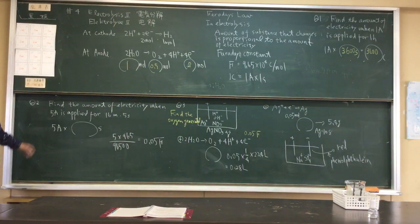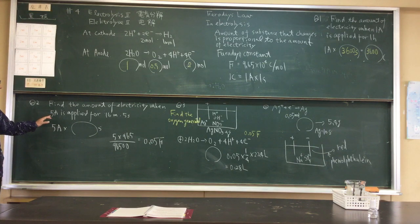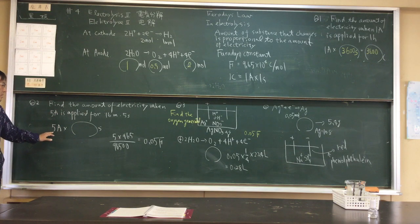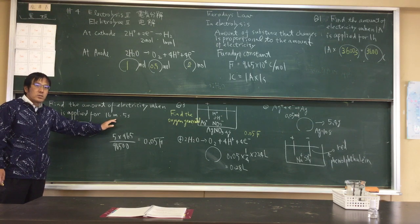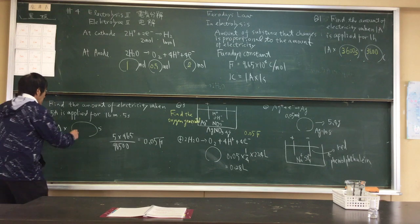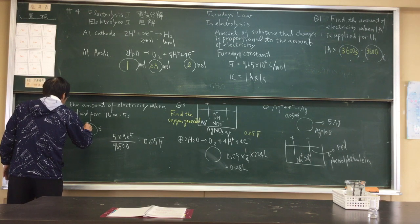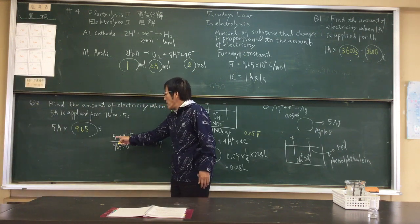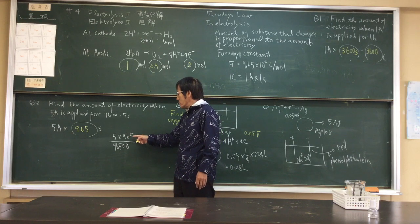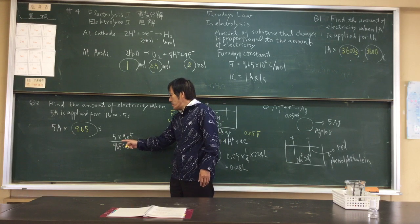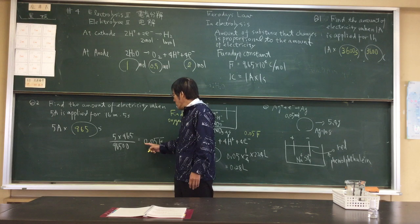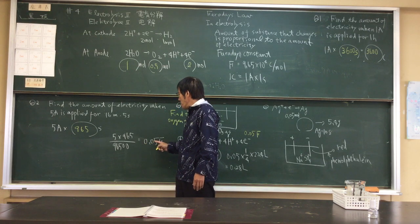Question two. Find the amount of electricity when 5 ampere is applied for 16 minutes and 5 seconds. 5 ampere times this time corresponds to 965 seconds. 5 times 965 seconds divided by 9,650. Equal 0.055.